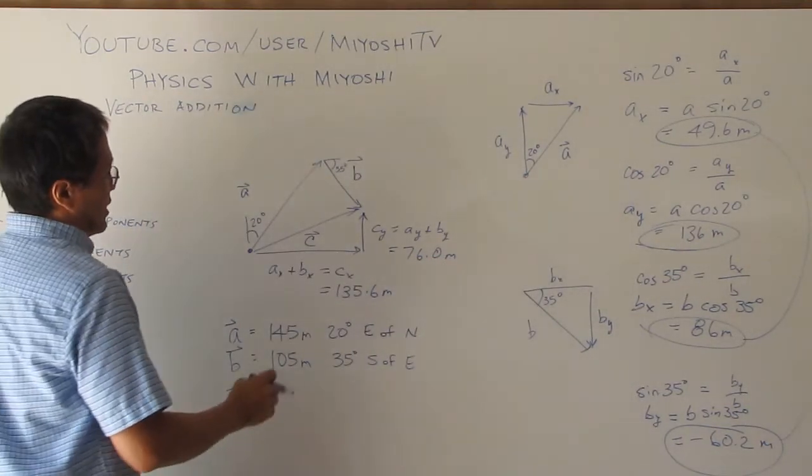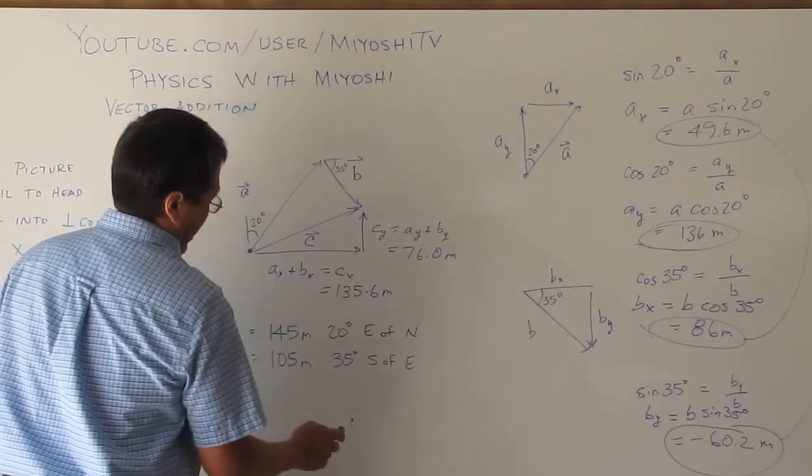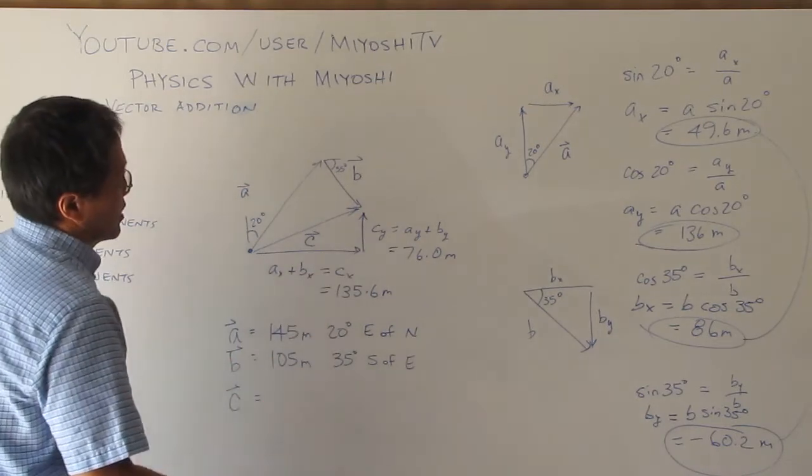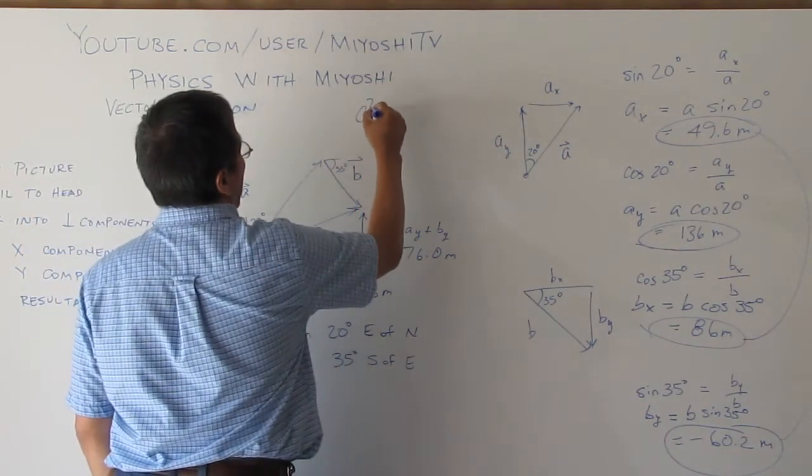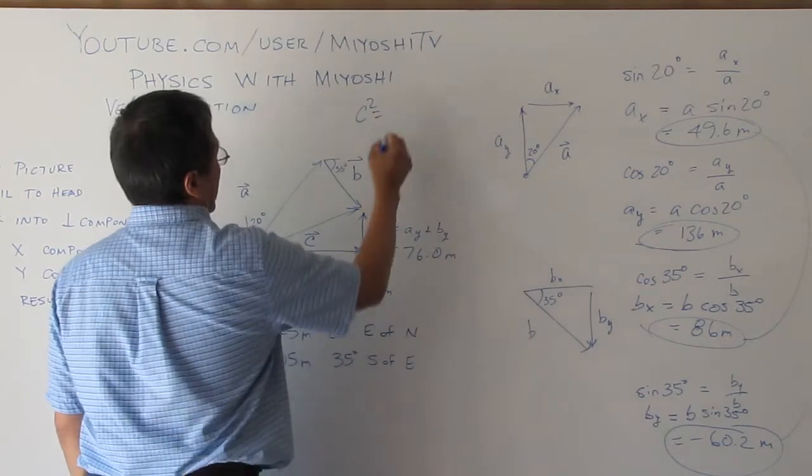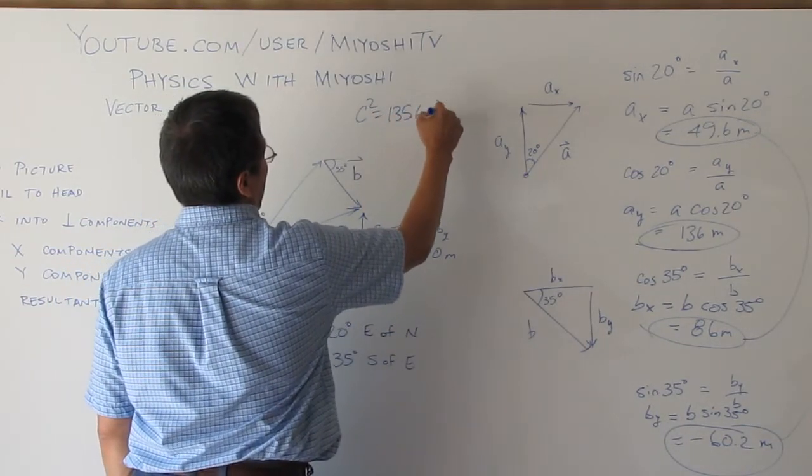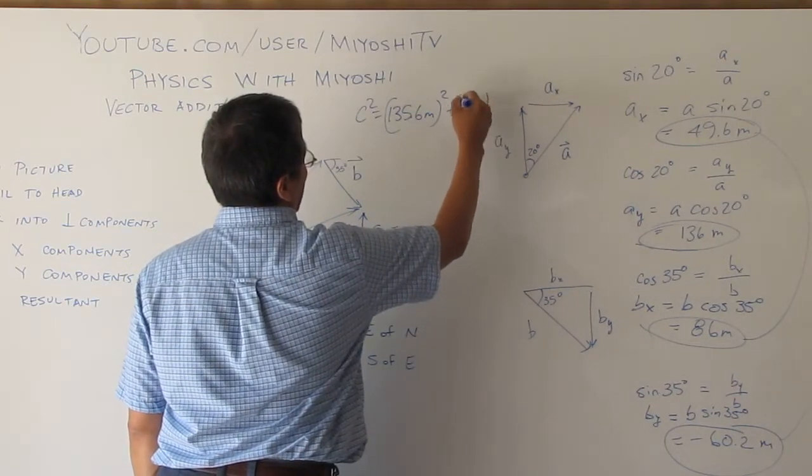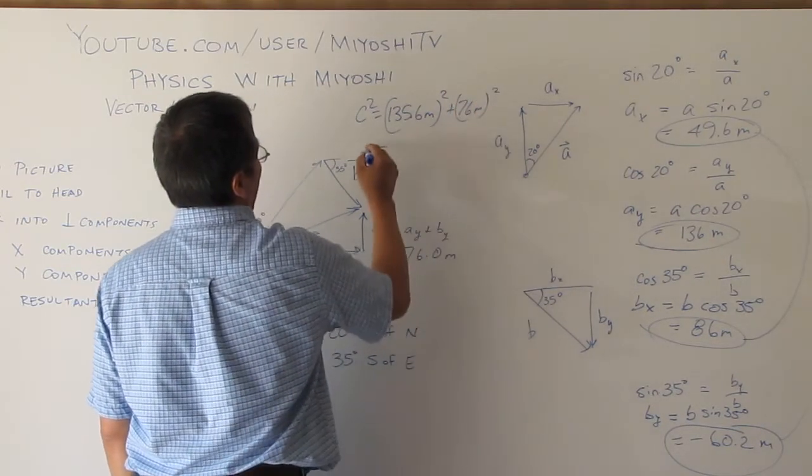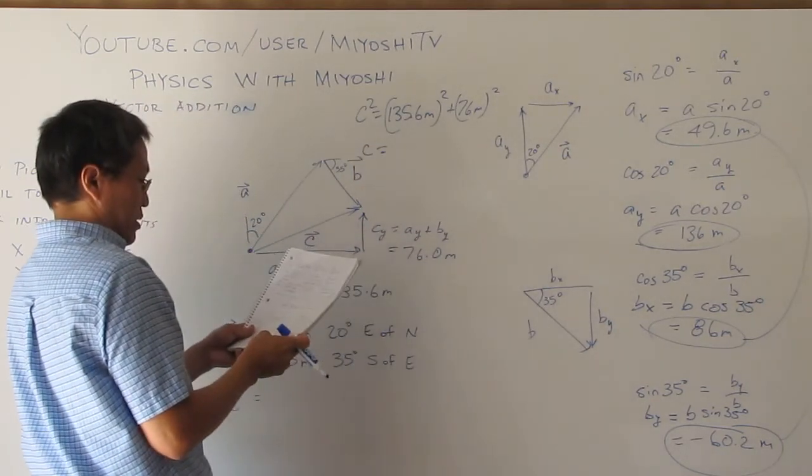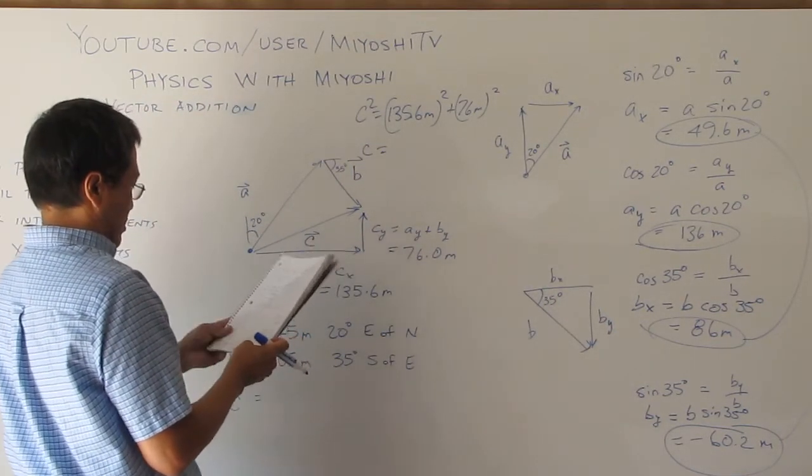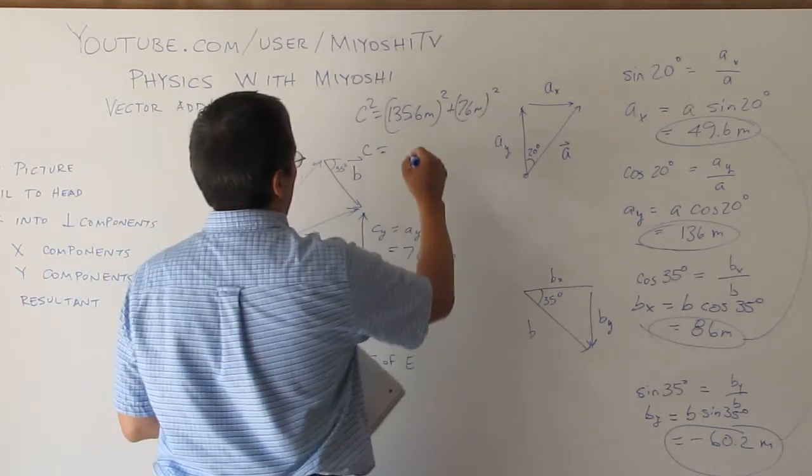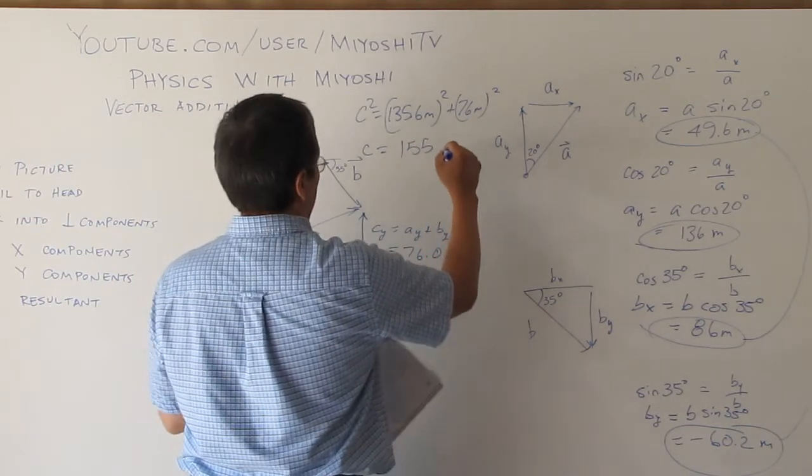Now, I'll do the Pythagorean theorem again. And I'll find out that c, the magnitude of c, let's just do it right here. c squared is 135.6 meters squared plus 76 meters squared. And I did all the calculations and found out that c is 155 meters.